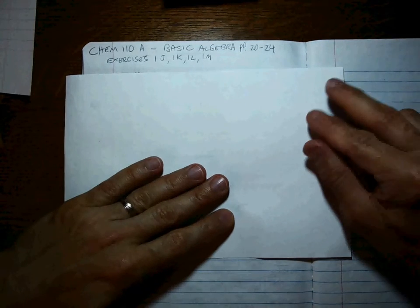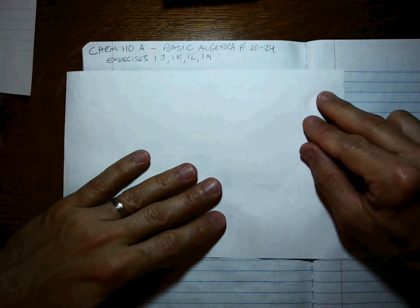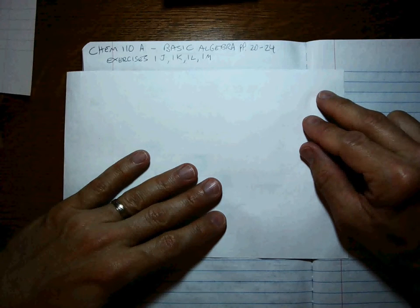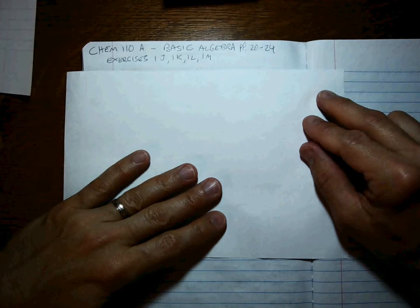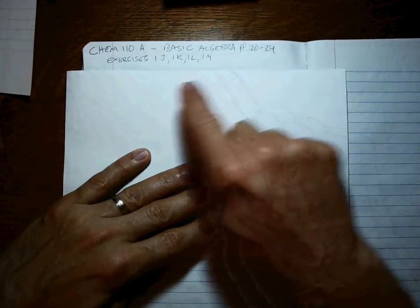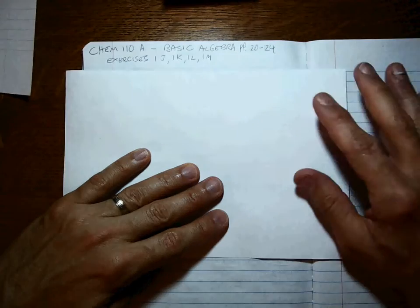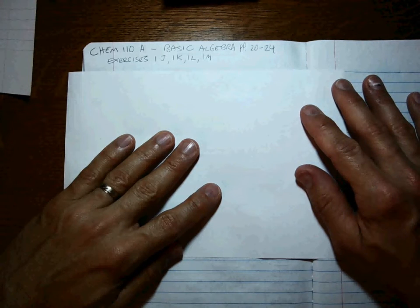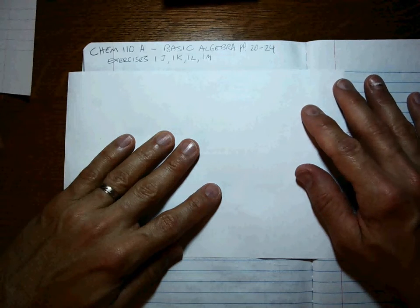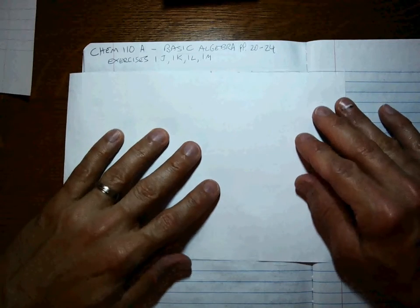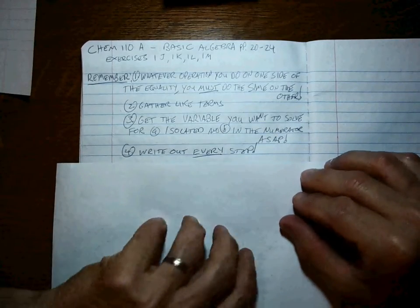Okay, now that we've covered how to deal with significant figures in the kinds of operations you're going to have to do, you're going to have to get ready to be able to do some basic algebra so that you can rearrange formulas and solve for what you want. So we're talking about pages 20 through 24 and exercises 1J, 1K, 1L, and 1M. This is all stuff that you should feel comfortable with having done in the past, and all you've got to do to get comfortable with it again is to practice up on it. Okay, a couple of things to remember in order to do algebra and do it right.